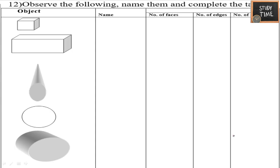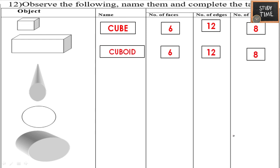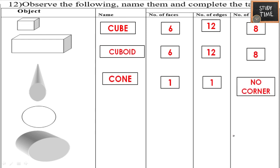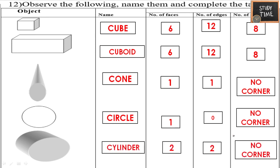Observe the following shapes, name them, and complete the table with number of faces, edges, and corners. Cube: 6 faces, 12 edges, 8 corners. Cuboid: 6 faces, 12 edges, 8 corners. Cone: 1 face, 1 edge, no corners. Circle: 1 face, no edges, no corners. Cylinder: 2 faces, 2 edges, no corners.